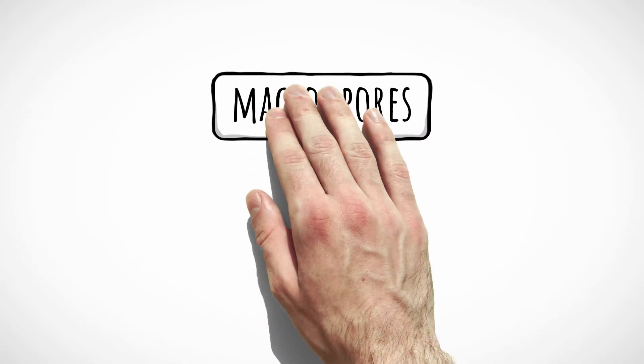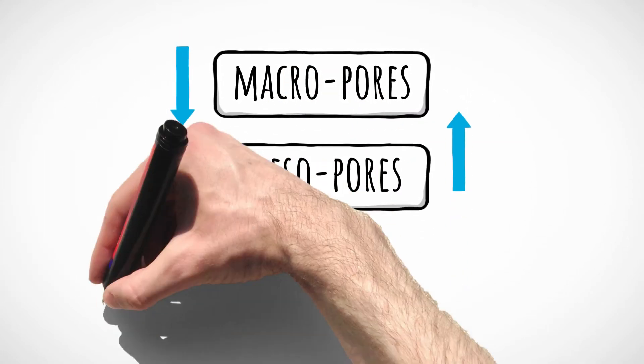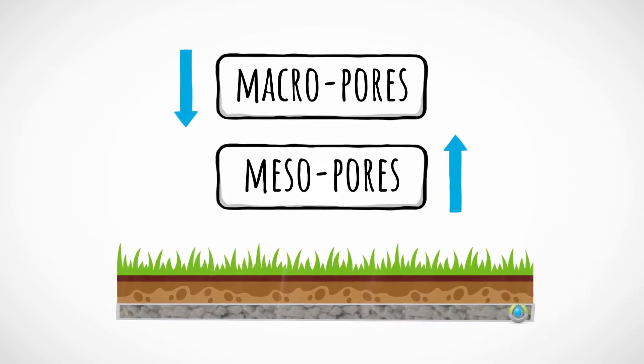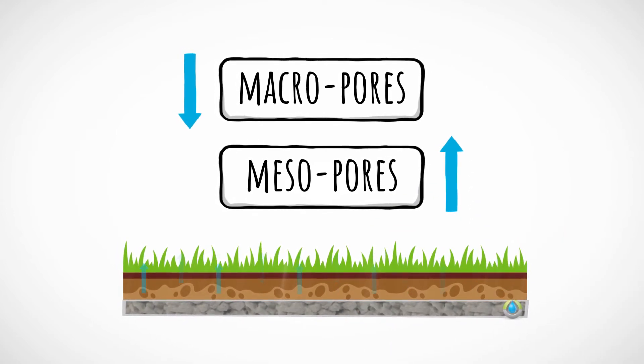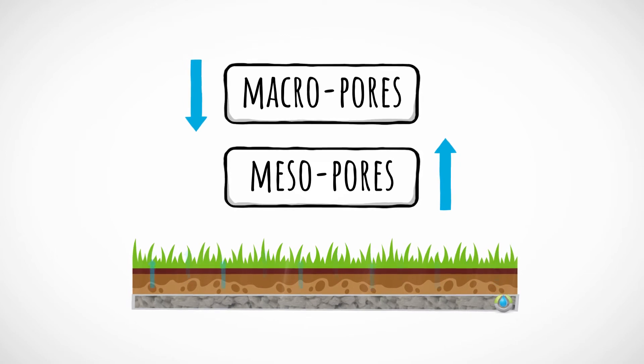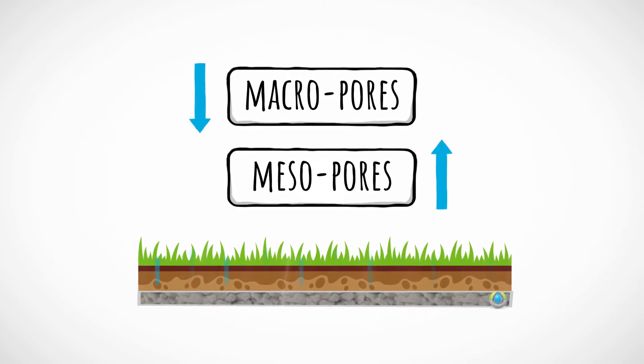By combining macropores and mesopores into one super strong material, you can drain larger amounts of water and supply irrigation from below, providing ideal moisture levels and making grass stay healthy at all times.